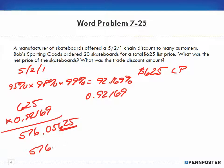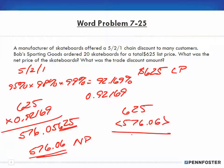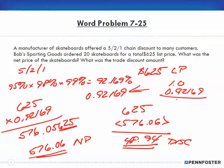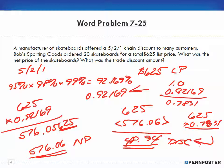Rounding to cents — since 5 rounds up — the net price is $576.06. The difference between $625 and $576.06 ends up being $48.94, which is the discount amount. Remember, I could have taken the single equivalent, subtracted it from 1 — so 1 minus 0.92169 equals 0.07831 — and then multiplied $625 by 0.07831 to arrive at that same discount amount of $48.94. Two different ways to arrive at the same discount amount.